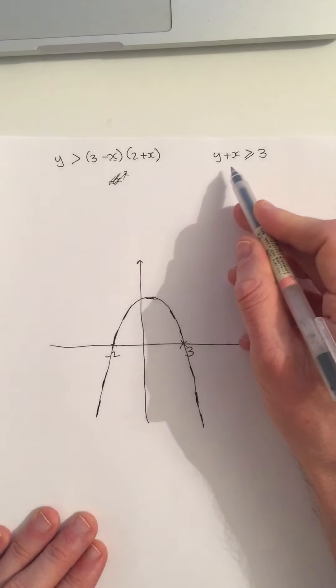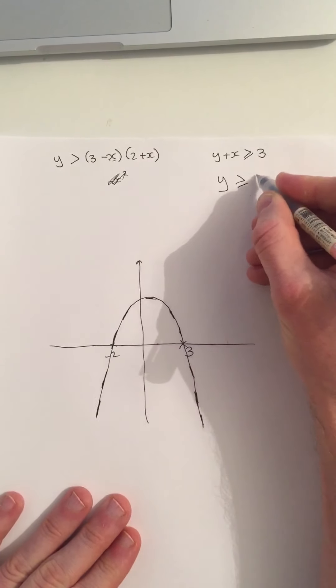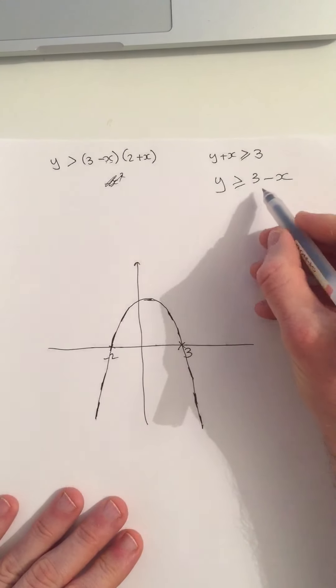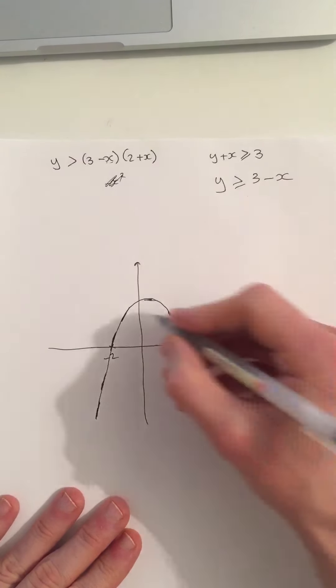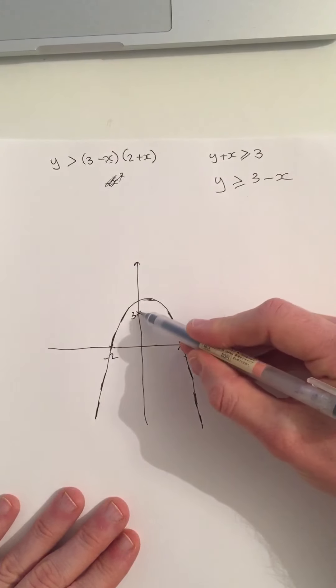Right, y plus x is greater than 3. Let's rearrange this to get it in the form of y equals mx plus c. I can now see that my y intercept is 3 and it's got a gradient of minus 1. So if I say that's 3 there, a gradient of minus 3. Sorry, minus 1.